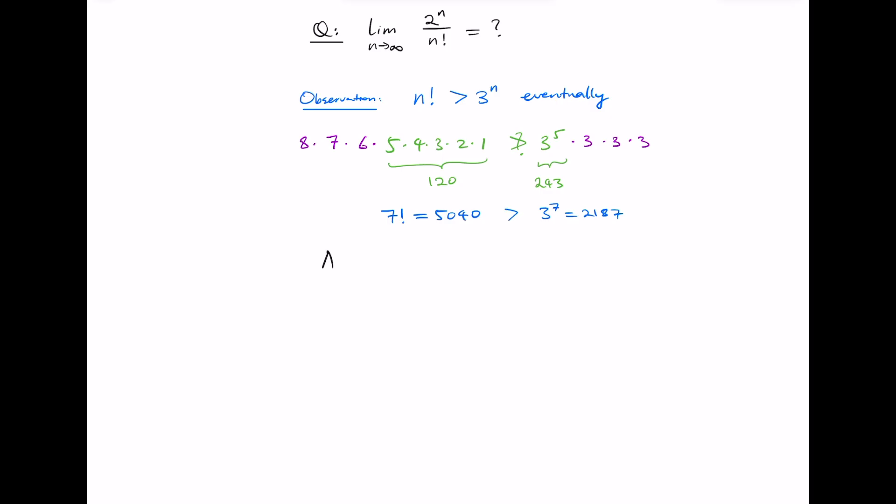So now going back to the question, this means that 2 to the n divided by n factorial is eventually going to be less than 2 to the n divided by 3 to the n.